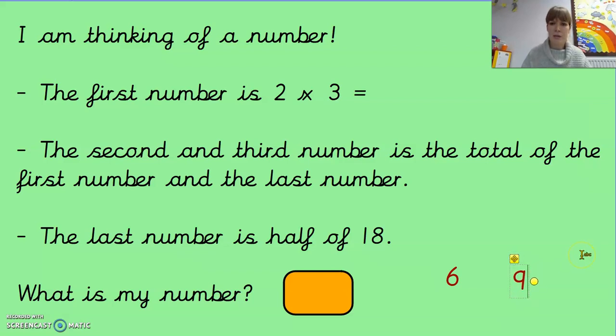Now let's see if I can answer that one. So the second and third number is the total of the first number and the last number. So we need to add together the first number and the last number, six add nine which equals 15. So that's one and five. So my answer is 6159. There we go. I've got the answer underneath there as well.